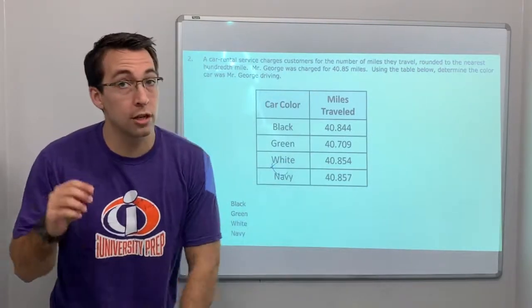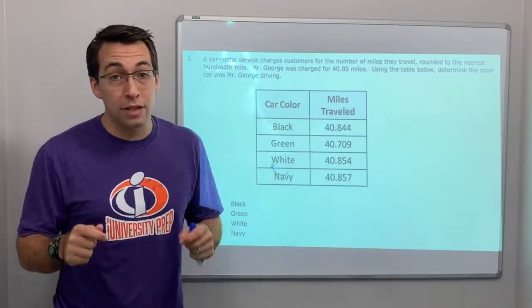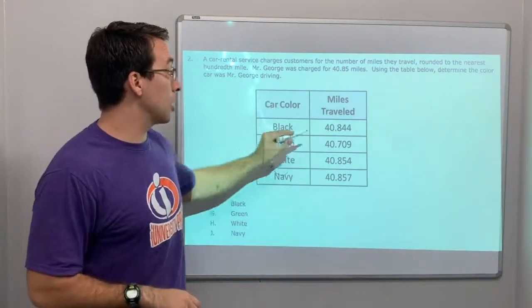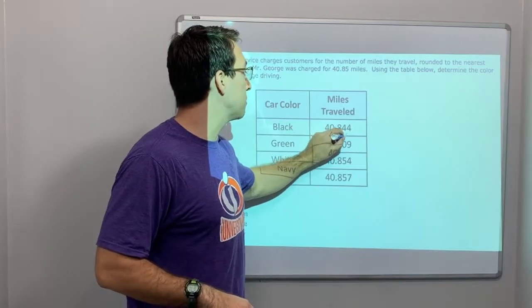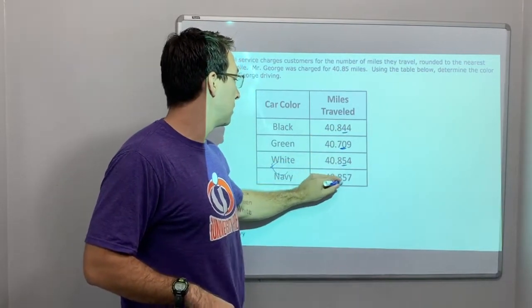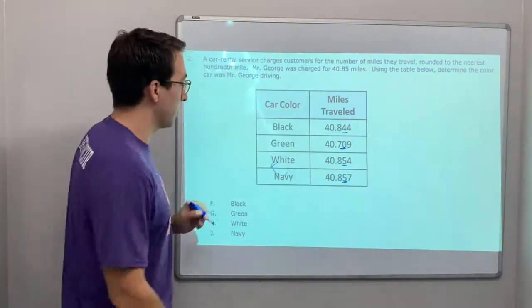A car rental service charges customers for the number of miles they travel. Round it to the nearest hundredth. Round it to the nearest hundredth. So, let's underline our hundredths place. That's the second digit, right? Hundredths place.